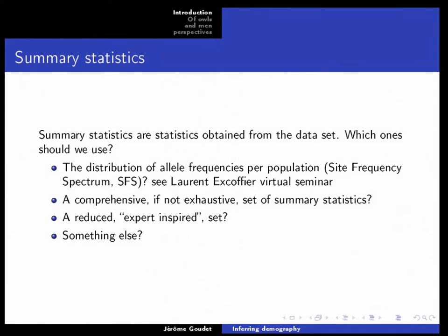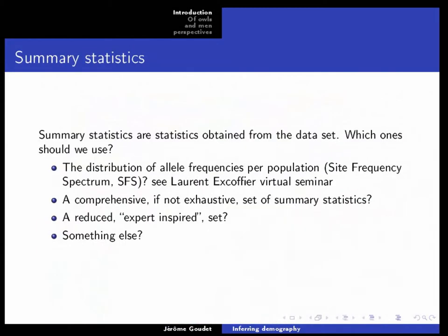However, the more statistics we use, the more difficult it is to match the two sets — we move into higher and higher dimensional space. So people tend to reduce this using some form of multidimensional scaling rather than an exhaustive set. Another approach, and the one I will focus on in both examples, is to use a reduced, expert-inspired set of statistics — people who know their species and the relevant patterns select which statistics matter.